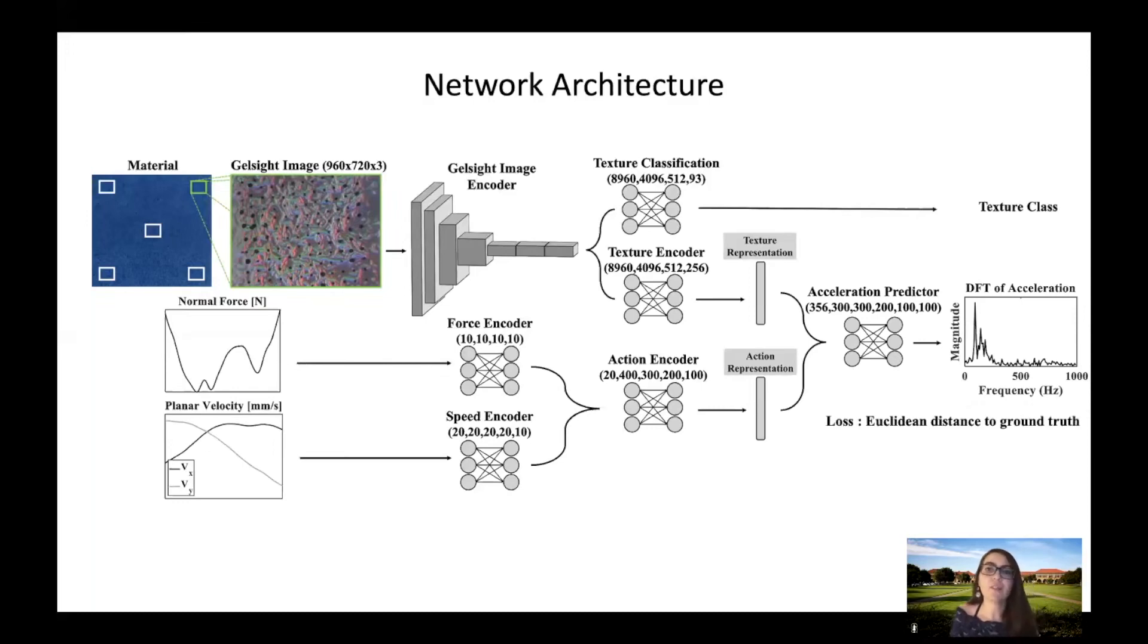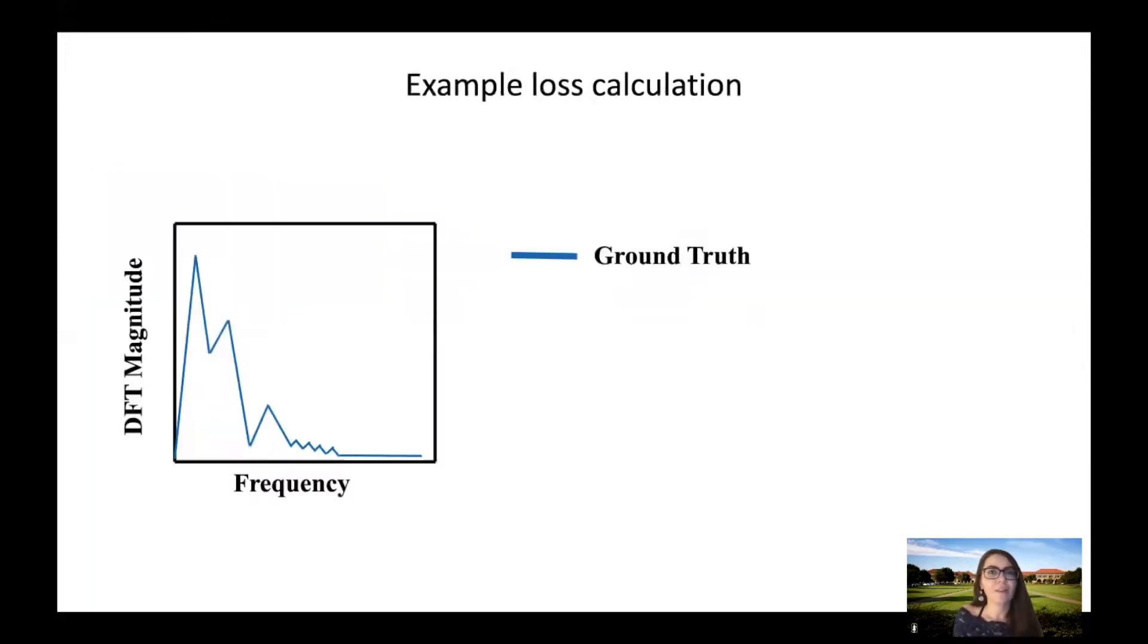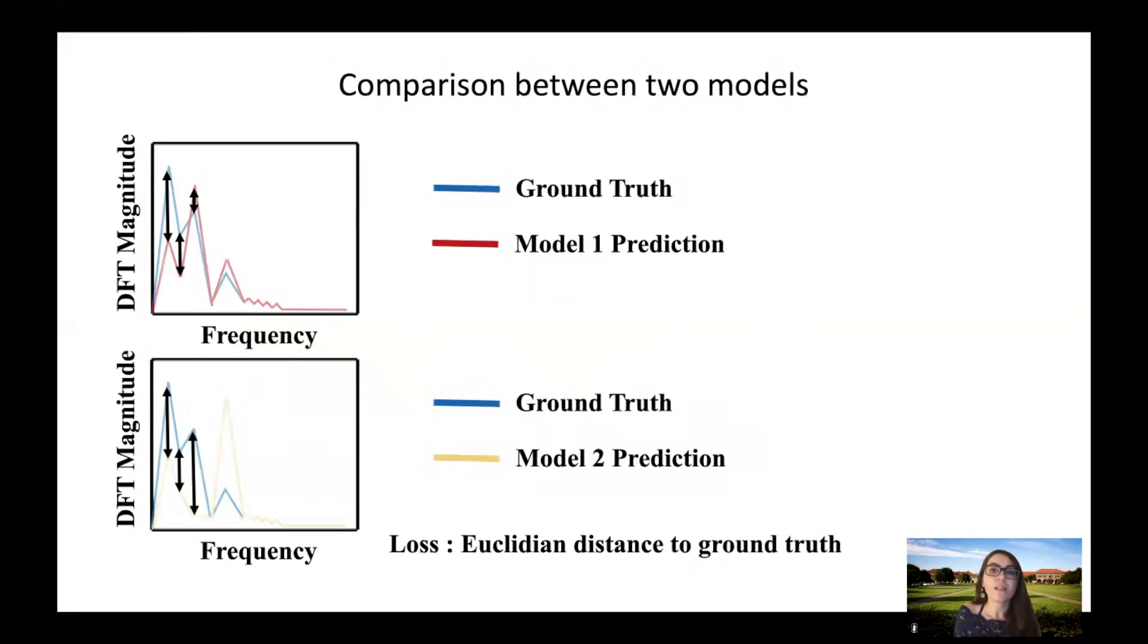As loss, we choose a Euclidean distance between the ground truth and predicted magnitude up to 1000 Hz. We evaluate the performance of a given model using the following loss calculation. I will explain the process first and then show how it works with real data. For each sample point, we take the DFT magnitude of the ground truth signal and compare it to the DFT prediction of the model. The loss of the model is defined as the Euclidean distance of these two DFTs. When comparing the performance of two models on a data point, we calculate the difference in the associated loss of each model.